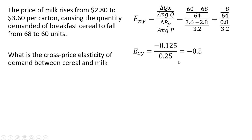And then finishing this up, we get a cross-price elasticity of demand between cereal and milk of minus 0.5. So a 1% increase in the price of milk would reduce the quantity demanded of breakfast cereal by 0.5%.